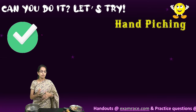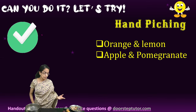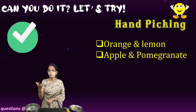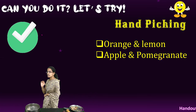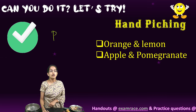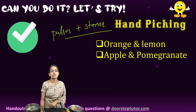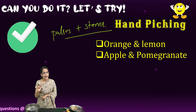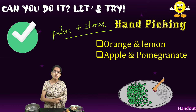In hand picking, we usually separate two similar-looking items — lemons from plums, or even lemons from oranges or apples. We commonly use it in daily life. For example, if you bought pulses from a shop and there were some stones mixed in, you need to separate the pulses from the stones by picking through hand. This is a very simple method of hand picking.